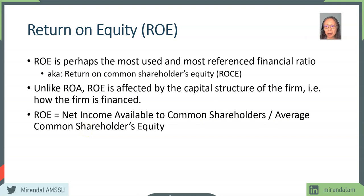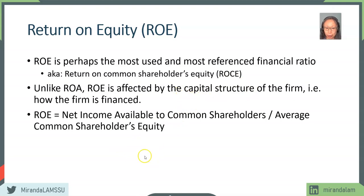Similar to ROA, we can also disaggregate ROE into individual components. With ROA, we have two components: profit margin and total asset turnover. With ROE, we have one more component, and that additional component has to do with the capital structure of the firm.